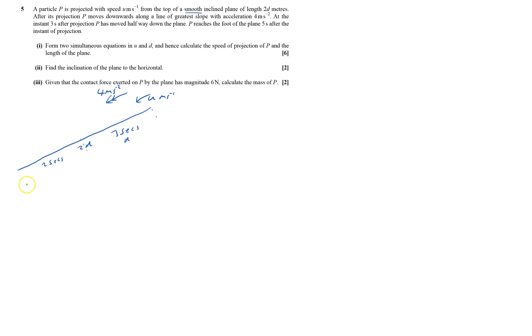So first part, form two simultaneous equations in u and d. I've got constant acceleration, it's 4, so I can use SUVAT, and I'm going to use the first part of the journey.